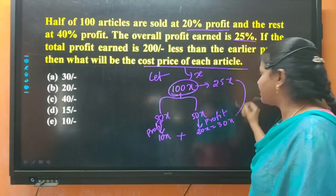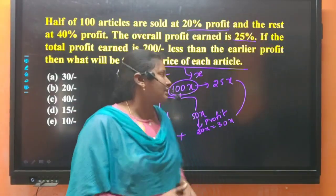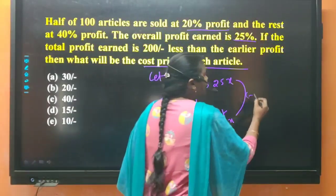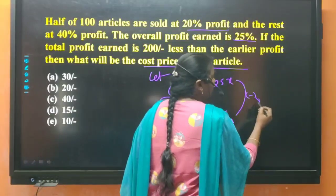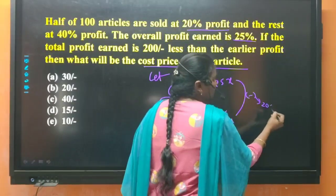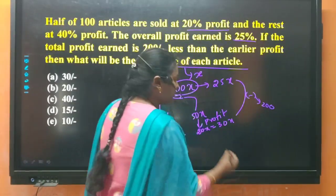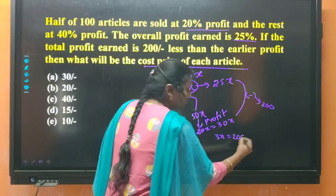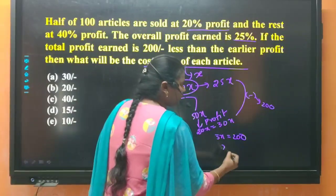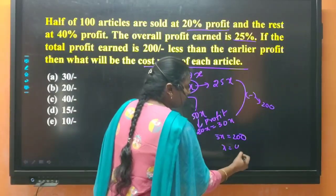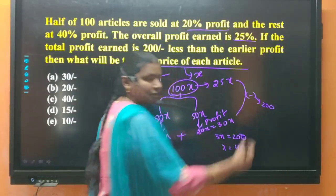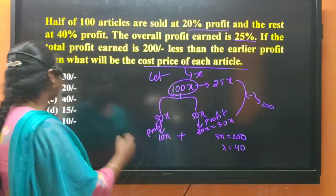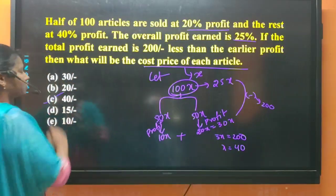The difference between 30x and 25x is 200 rupees. That means 5x = 200, so the value of x is 40 rupees. Therefore, the cost price of each article is 40 rupees.